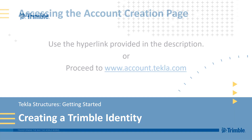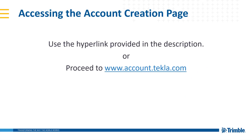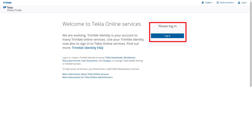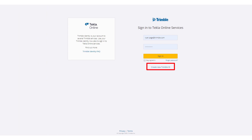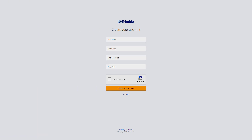To create a Trimble identity, you will need to proceed to the account creation page. You can use the link provided below, or you can proceed to www.account.tekla.com. Then click the login button, and finally click the 'Create New Trimble ID' hyperlink below the login fields. Either method will bring you to the account creation page.